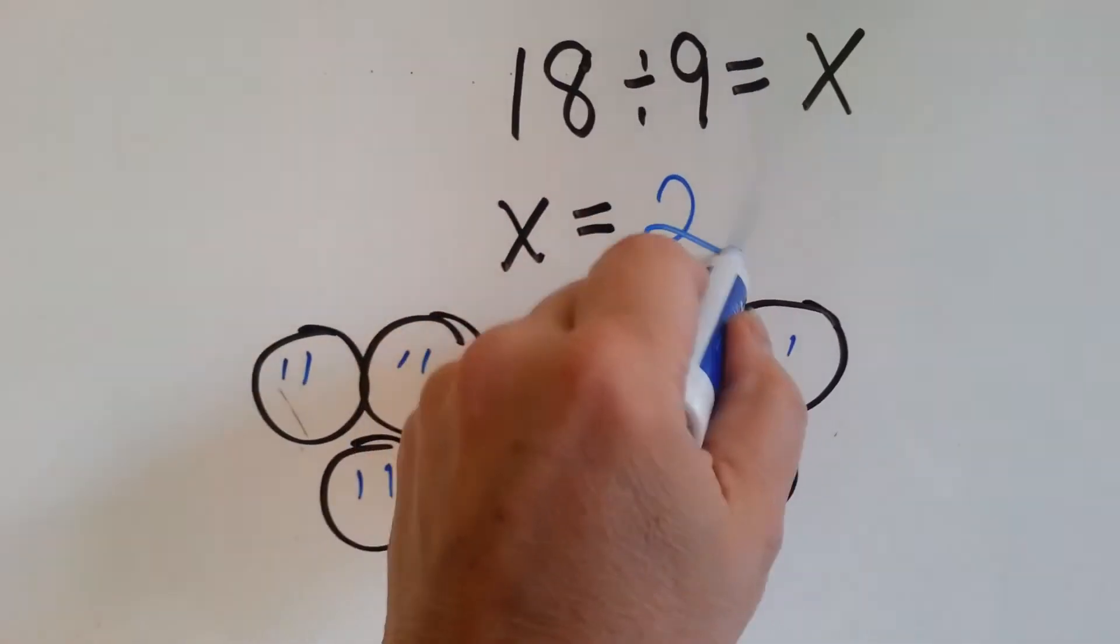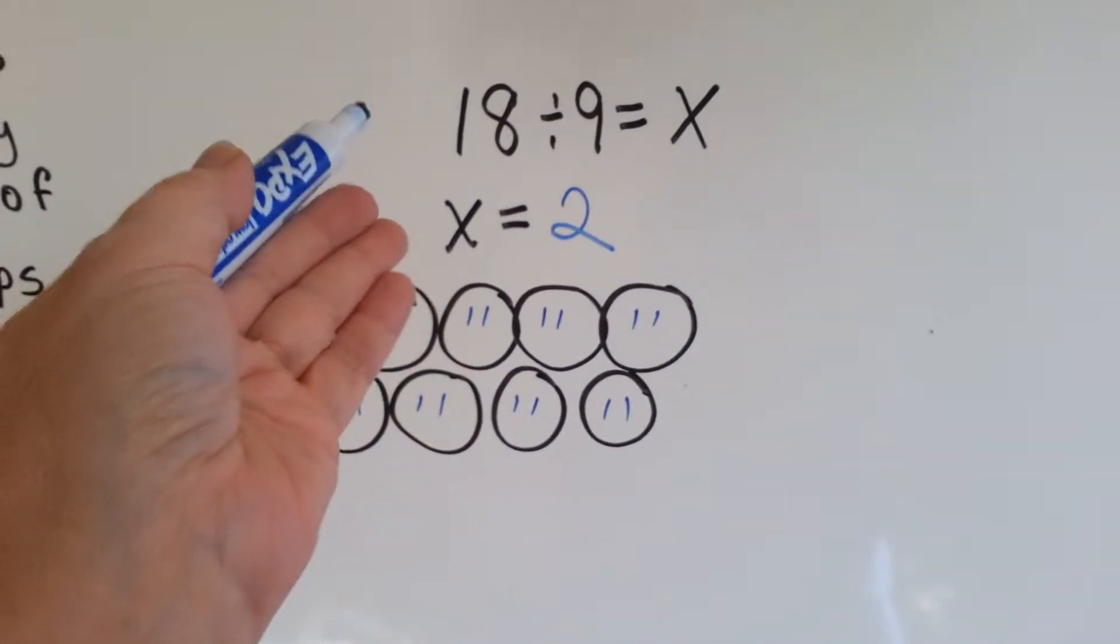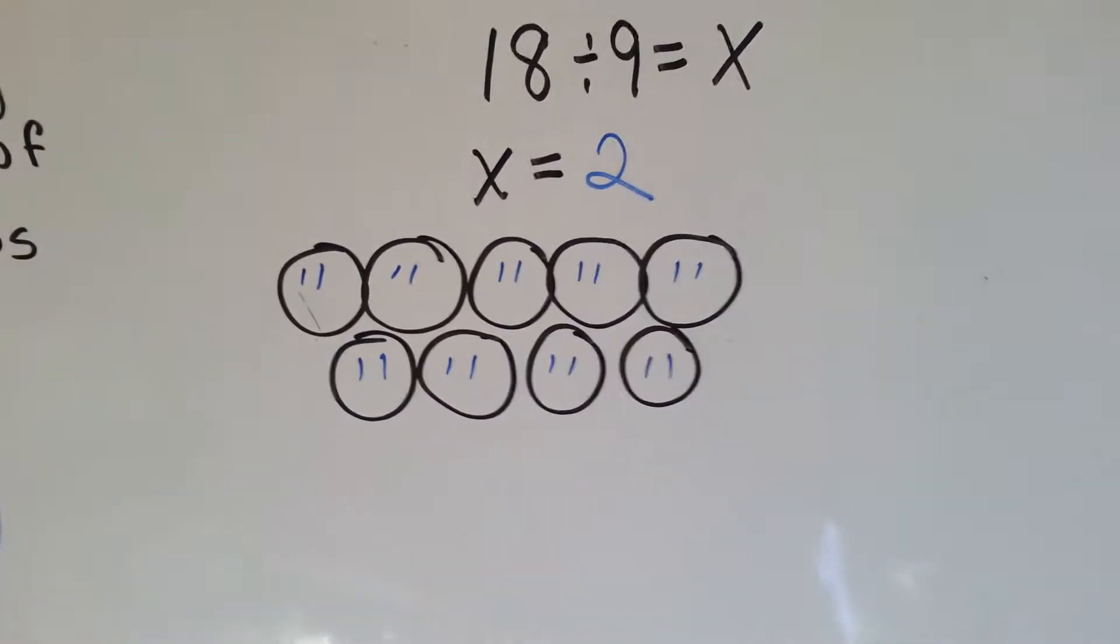So X equals 2. X is also a variable. Some other problem, it might equal 315 or 7 or something. But in this problem, X equals 2.